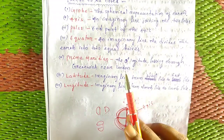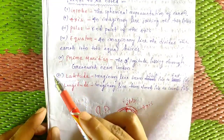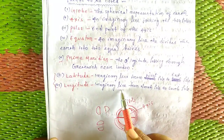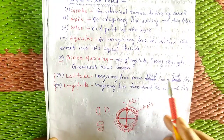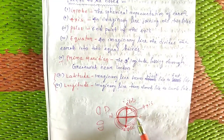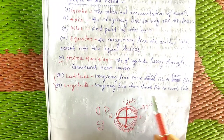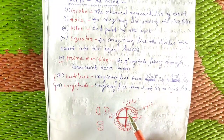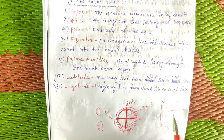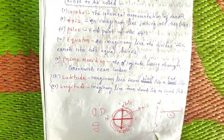The Prime Meridian is the zero-degree longitude passing through Greenwich, which is near London. Next is latitude and longitude — a brief introduction. Latitude is an imaginary line running west to east, while longitude is an imaginary line running north to south.